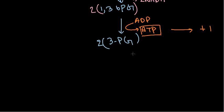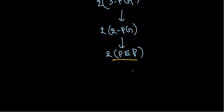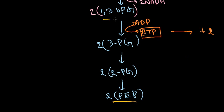After that, 3-phosphoglycerate undergoes a simple rearrangement where the phosphate group is transferred from the third carbon to the second carbon, producing 2-phosphoglycerate. From 2-phosphoglycerate, they produce phosphoenolpyruvate (PEP), which is another highly energetic molecule.